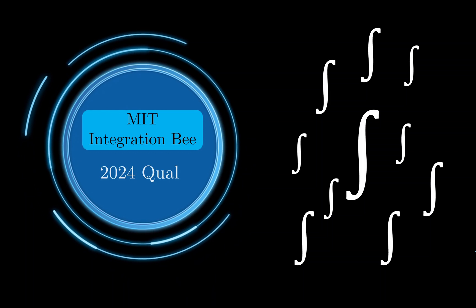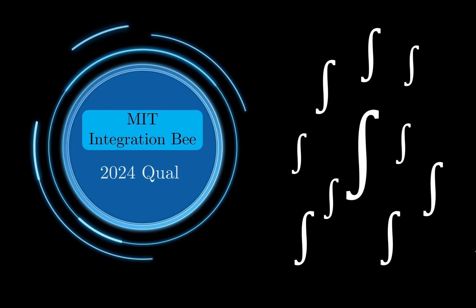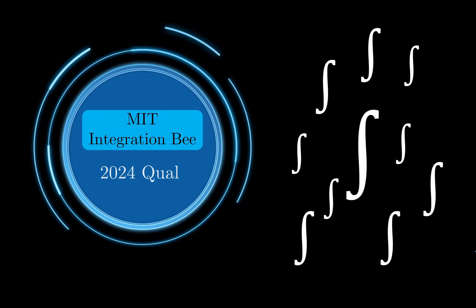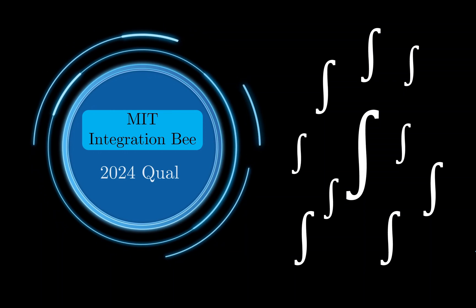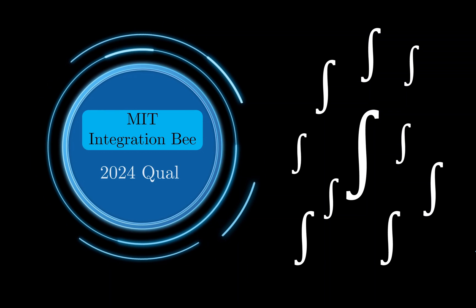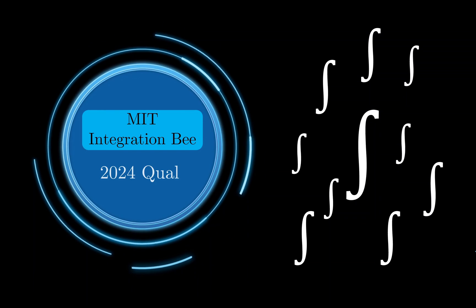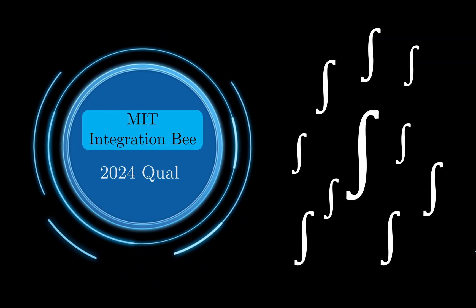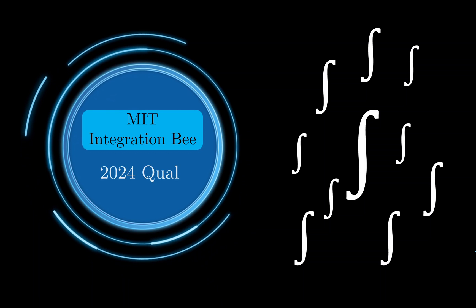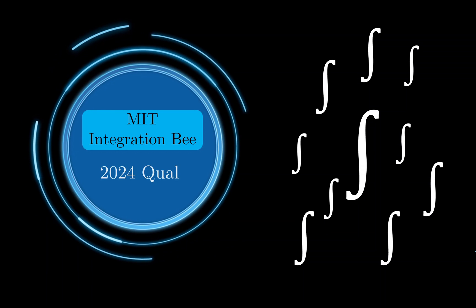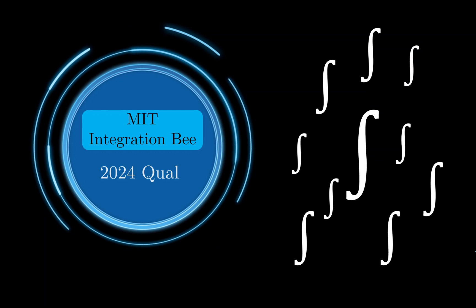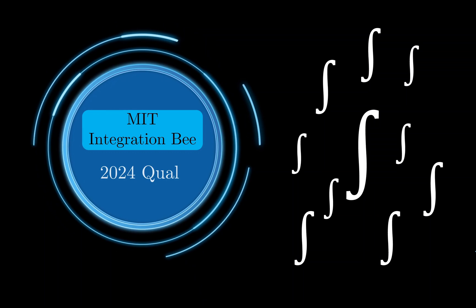Hello everyone, today we'll be taking a look at the MIT Integration Bee 2024 qualifying round, which consists of 20 problems to be solved in 20 minutes. This video will cover the first 10 questions, which are relatively simple but nonetheless interesting to quickly go through, and then we'll cover the next 10 problems in the next video. Without further ado, let us take a look at these 10 problems.